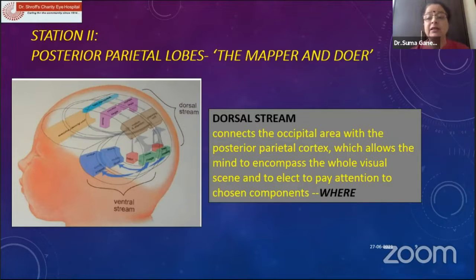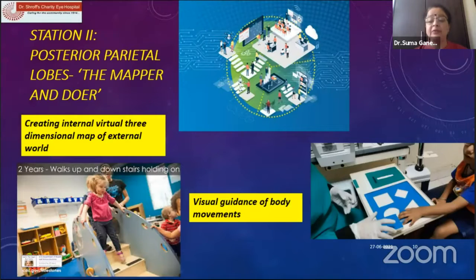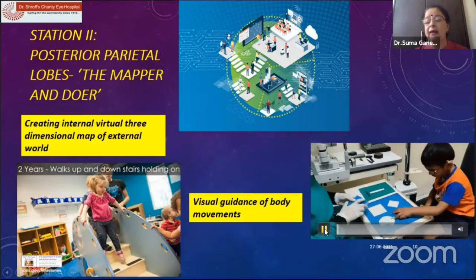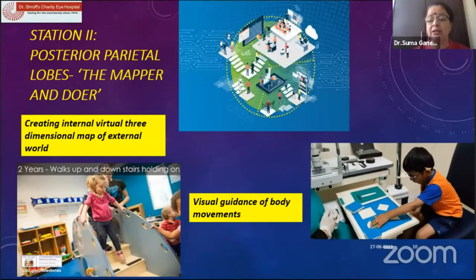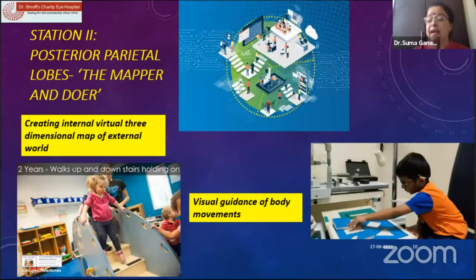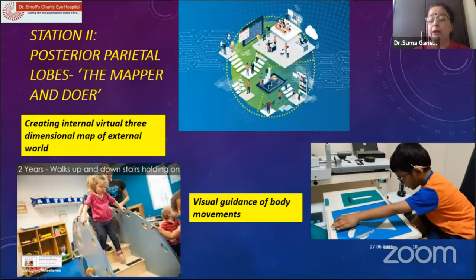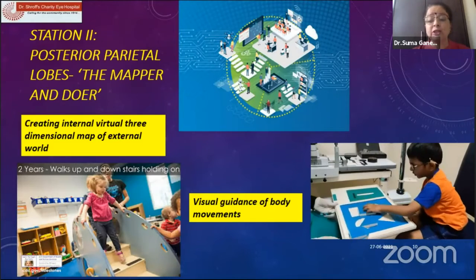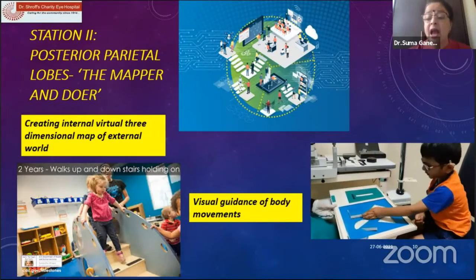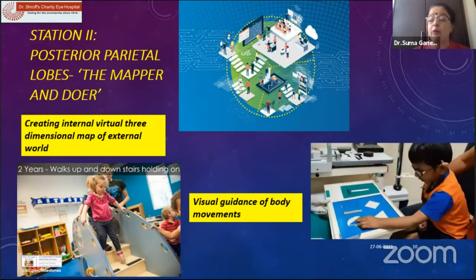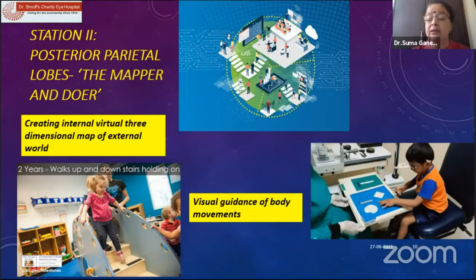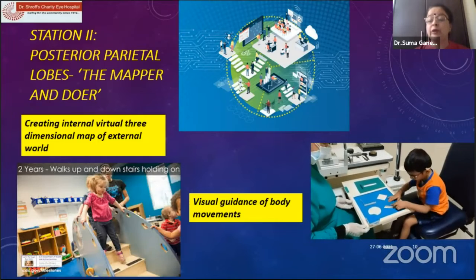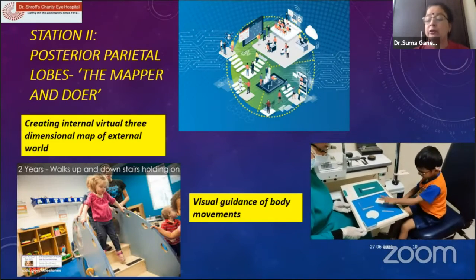The posterior parietal lobe connects the occipital lobe with the posterior parietal cortex and tells us where we are — it helps guide body movements. A simple example in the OPD: using the Lear mailbox, a child may have very good vision — 6/9 with glasses — yet still have problems. This child had right-sided hemiparesis and still had problems putting simple objects into the right places. Imagine how that child would be performing in school.